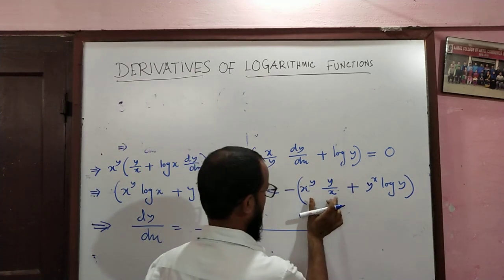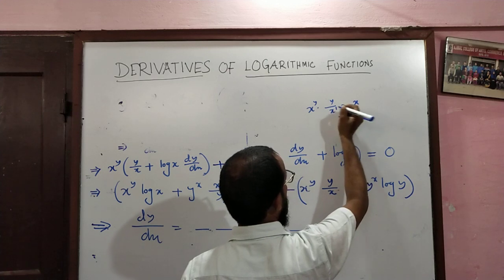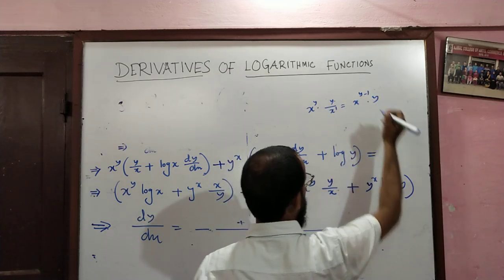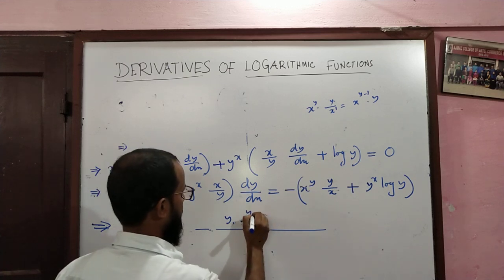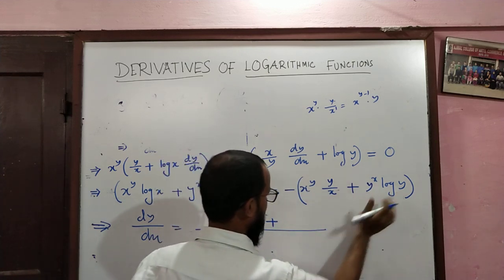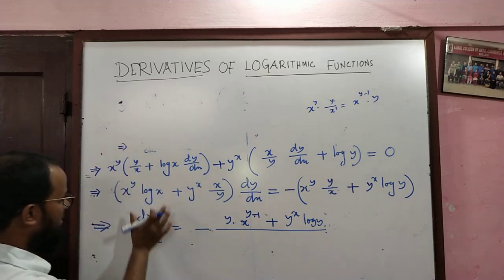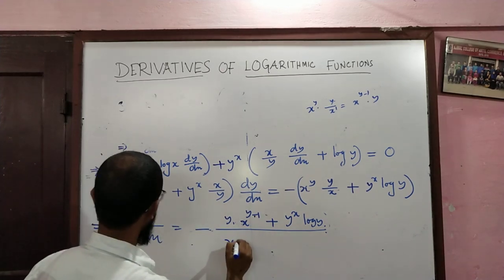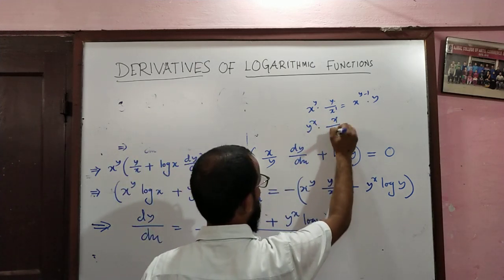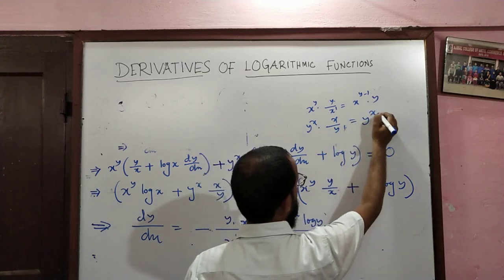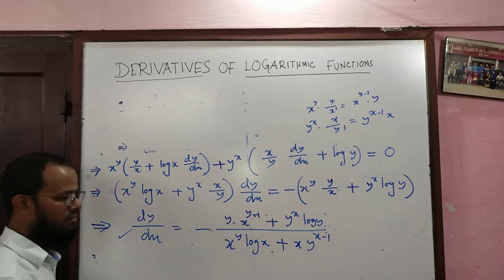Simplifying: the term x^y times y/x becomes y times x^(y-1), and y^x times x/y becomes x times y^(x-1). So dy/dx equals minus (y times x^(y-1) plus y^x times log y) divided by (x^y times log x plus x times y^(x-1)).